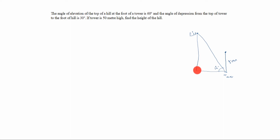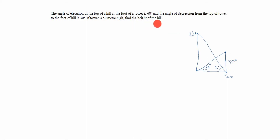The foot of the hill is here, and the angle from the top of the tower to the foot of the hill is 30 degrees. So we draw the line to the foot of the hill and this value is 30 degrees. The tower is already marked as 50 meters high. We need to find the height of the hill — that is what we need to calculate.